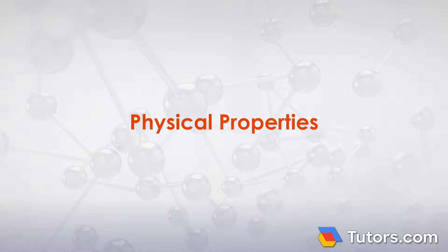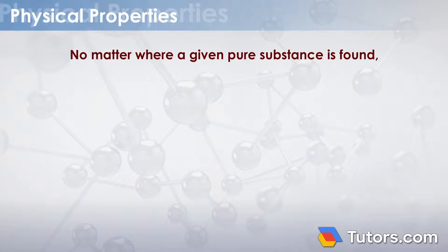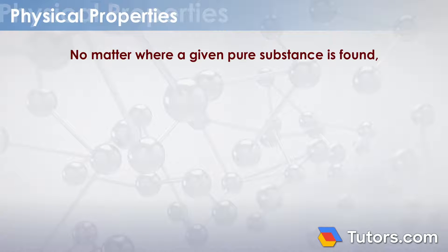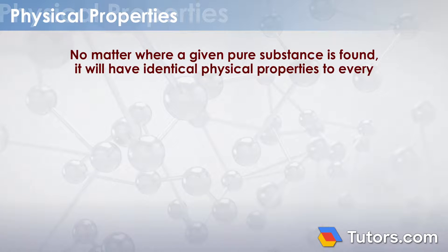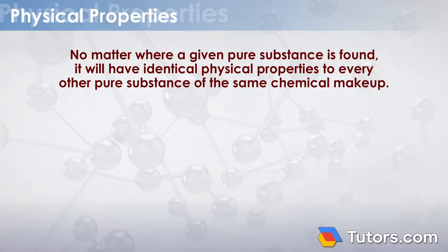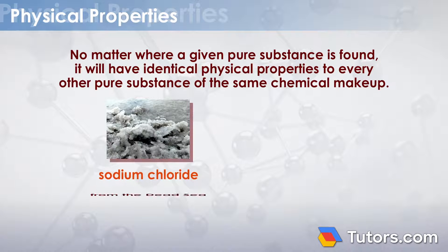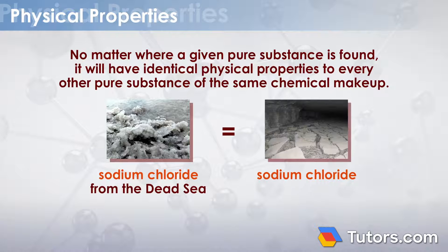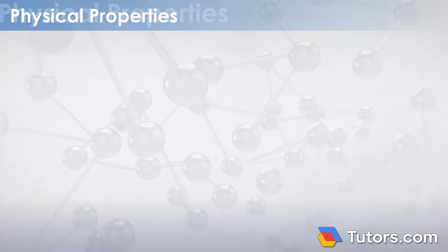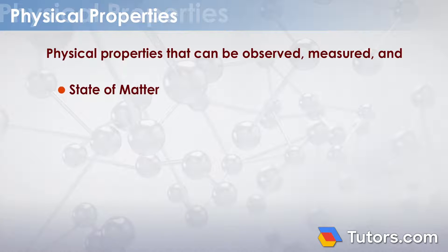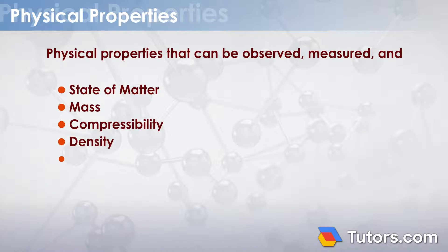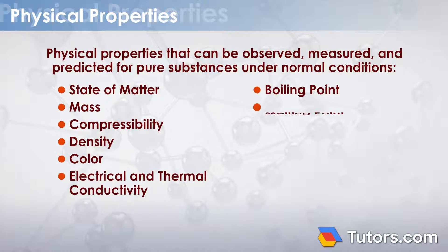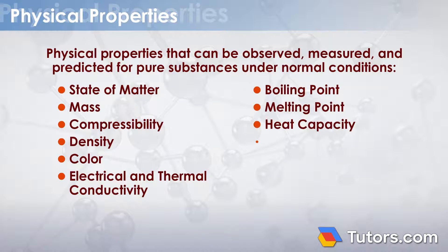Physical Properties: No matter where a given pure substance is found, it will have identical physical properties to every other pure substance of the same chemical makeup. Sodium chloride from the Dead Sea is physically the same as sodium chloride mined in Kansas. Here is a partial list of physical properties that can be observed, measured, and predicted for pure substances under normal conditions.